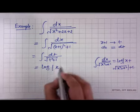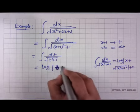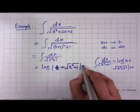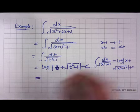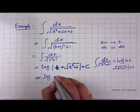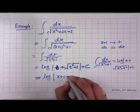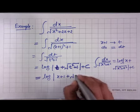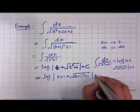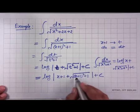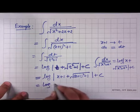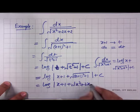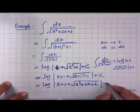Replacing x+1 with t, so dx = dt, the integral transforms into ∫dt/√(t²+1). We know ∫dx/√(x²+a²) = log|x+√(x²+a²)| + C. Here the variable of integration is t, so the result is log|t+√(t²+1)| + C. Since t = x+1, this becomes log|(x+1)+√((x+1)²+1)| + C.